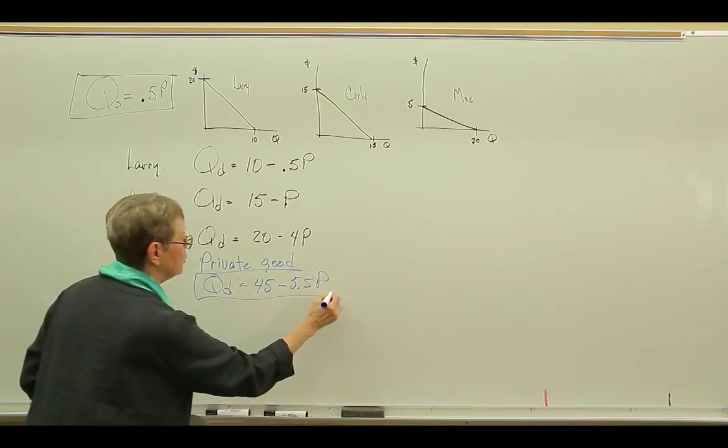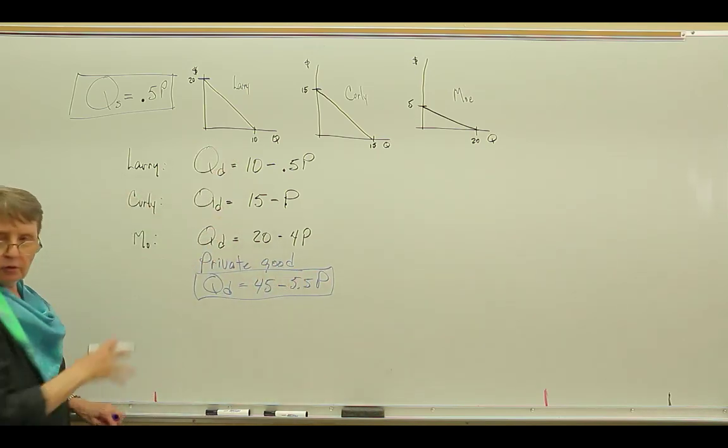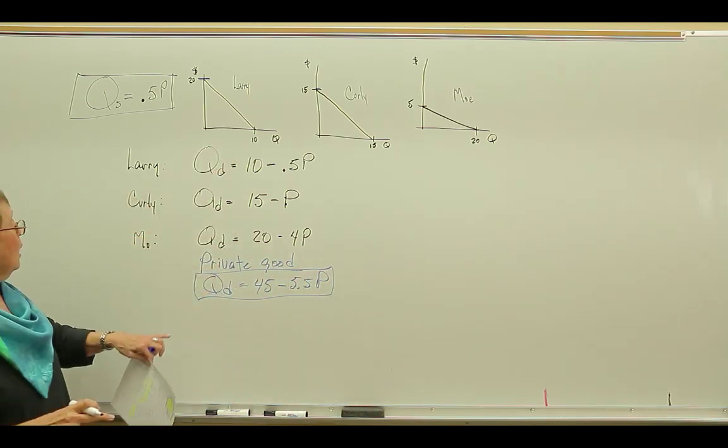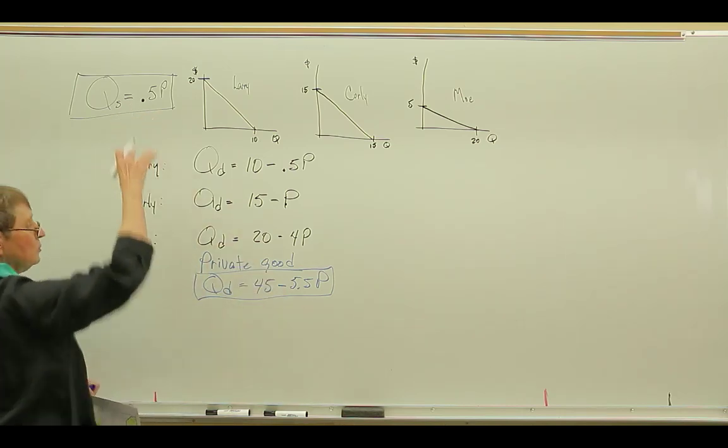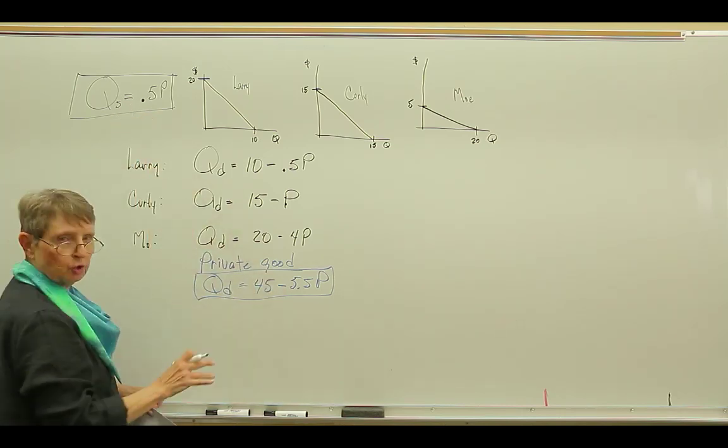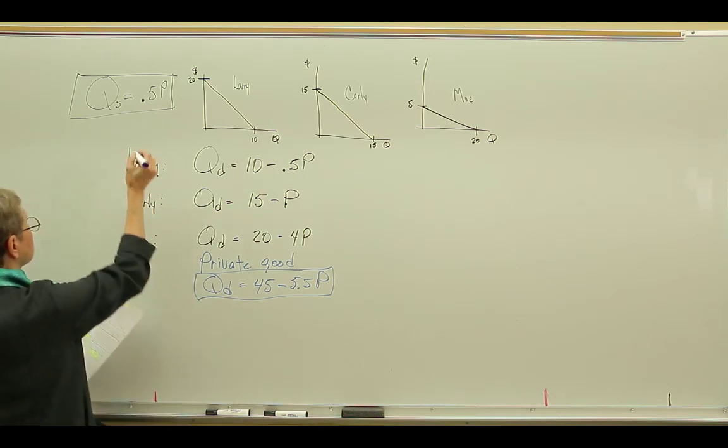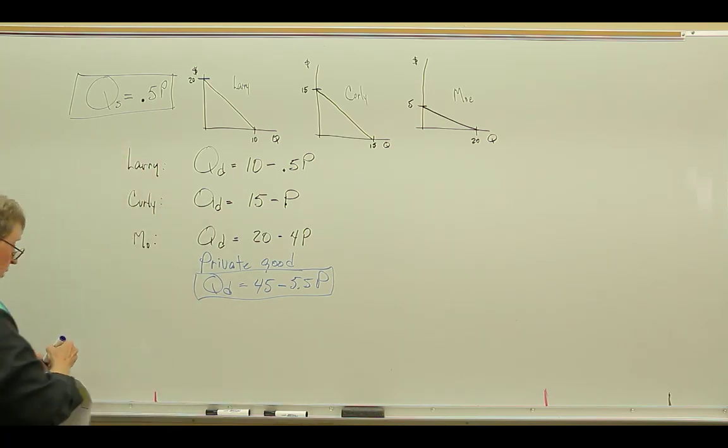And what we get is the quantity demanded equals 45 minus 5.5P. So this is the demand curve if this good is a private good. So if this is the demand curve and this is the supply curve, if we set these two equations equal to one another, the demand curve.